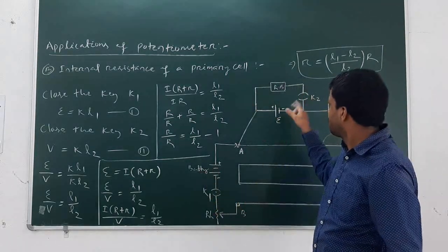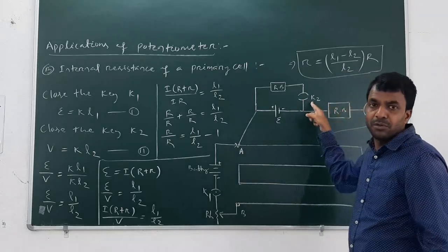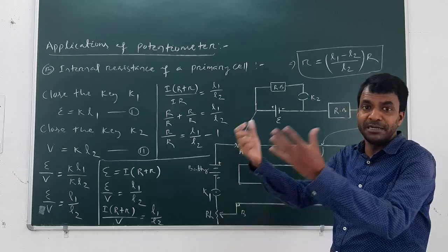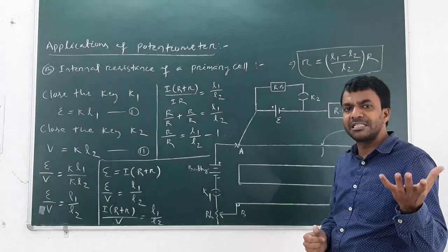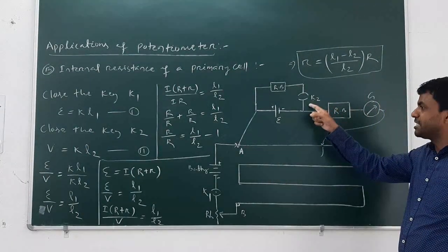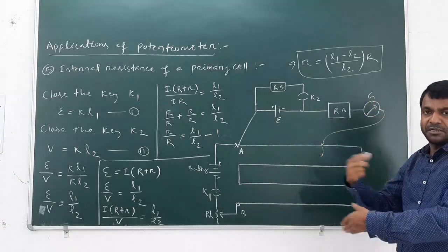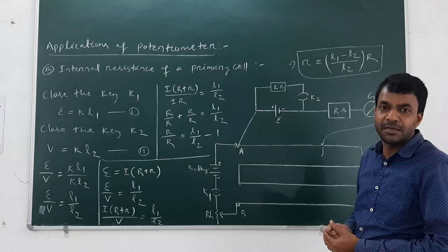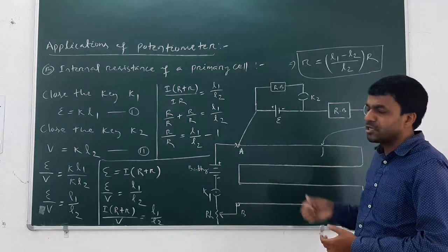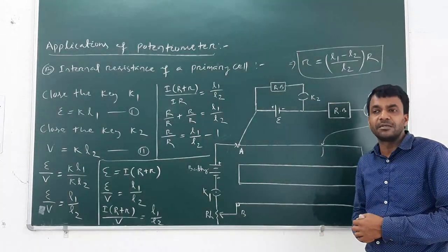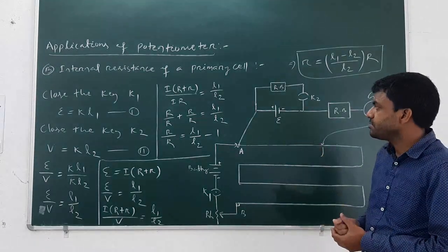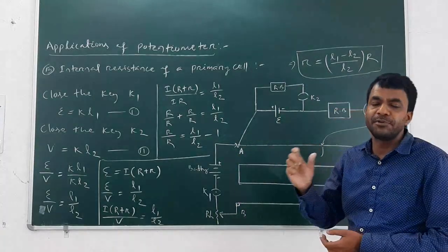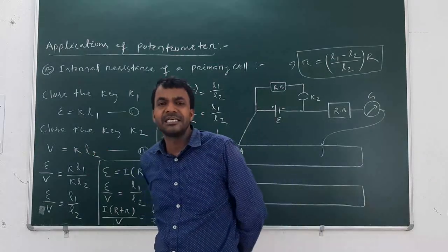Now close key K₂ and open key K₁ — just alternate the keys. A potential drop V will occur. Slide the jockey along the potentiometer wire until the null point is found. Let at some point the galvanometer shows no deflection; this length is L₂. According to the principle, the potential drop V is directly proportional to L₂, so V = KL₂. This is equation 2.